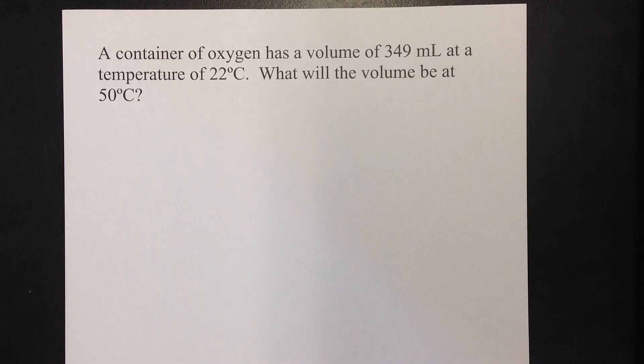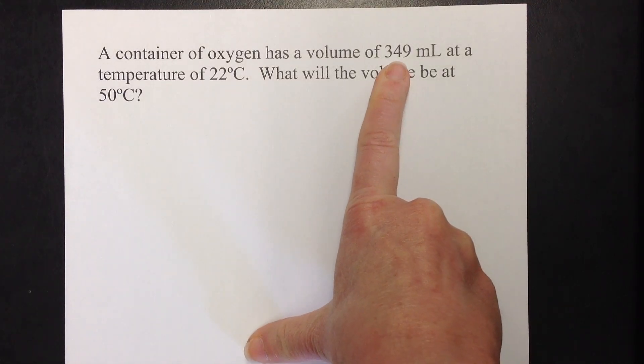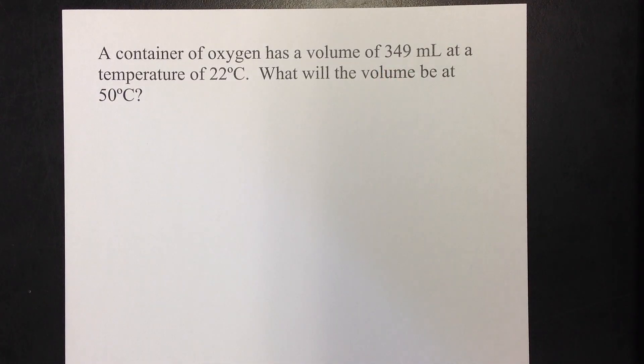A container of oxygen has a volume of 349 milliliters at a temperature of 22 degrees Celsius. What will the volume be at 50 degrees Celsius? So, this time, it looks like we're starting off at a lower temperature, and we're moving up to a higher temperature. So, I'm going to expect that volume to go up from 349. But let's see if I'm right.